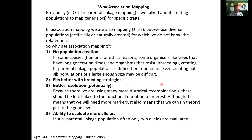Why use association mapping? You don't have to create a population — you can immediately go into a phase of looking for molecular markers. It can fit better with breeding strategies because we can use individuals from a number of different crosses to find the markers we're interested in. Potentially there's better resolution because of higher historical recombination.